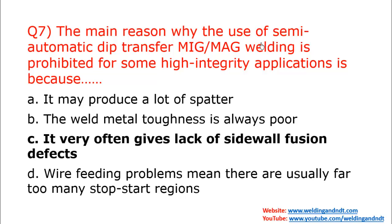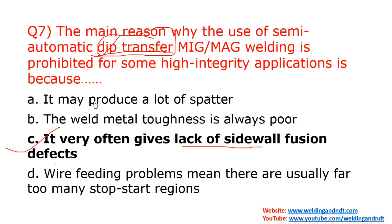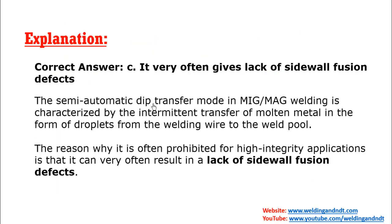Question number seven: the main reason why semi-automatic dip transfer MIG/MAG welding is prohibited for some high integrity applications is because? Dip transfer is avoided because it very often gives lack of sidewall fusion — that is option C, the correct answer. Dip transfer is intermittent, not continuous — the filler wire melts then goes back, melts then goes back. It is intermittent metal transfer.